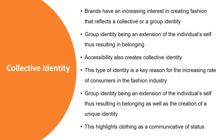Our next topic for this lecture is collective identity. As stated previously, collective identity and belonging are interlinked — they have a very close relationship and usually result in each other. Brands have an increasing interest in creating fashion that reflects a collective or group identity. Designers gather influence from where they are and from the environment they grew up in, and usually there are people who grew up in the same environment or can relate, who then buy their garments. This creates a group identity as people identify with a certain representation. Group identity is just an extension of the individual self and it results in belonging — it is not entirely who you are, but just a part of who you are. Group identity also creates collective identity.